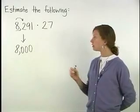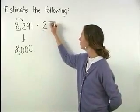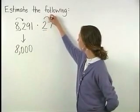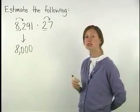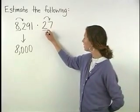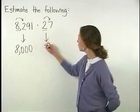To round 27 to the nearest ten, the digit to the right of the rounding place, seven, tells us to round up. So 27 rounds up to 30.